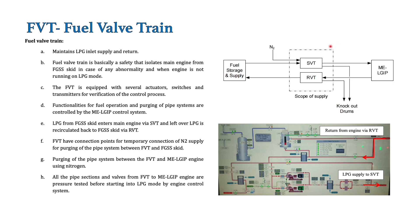The question is: why do we need this fuel wall train? We have the supply system and the main engine — why can't we supply LPG directly? The answer is that the fuel wall train is basically a safety unit that isolates the main engine from the fuel gas supply system when there is some kind of abnormality while the main engine is running on dual fuel. When an abnormality occurs, it will automatically isolate the fuel gas supply system from the main engine and change over to primary fuel.